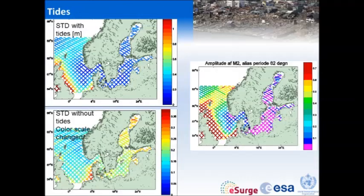Once you have the satellite data in place — this is actually satellite data from Topex and Jason-1 when they were flying side by side, which is why the data coverage is quite dense for the North Sea — this shows the standard deviation of the data with tides included.